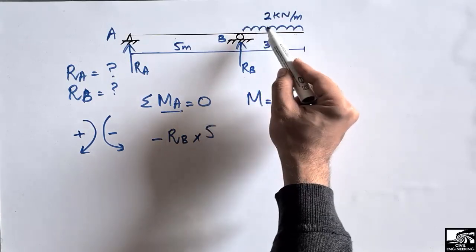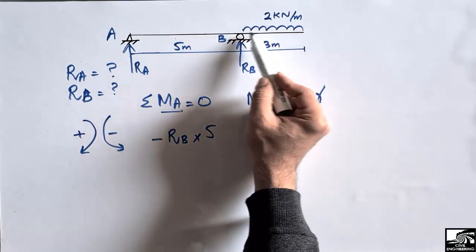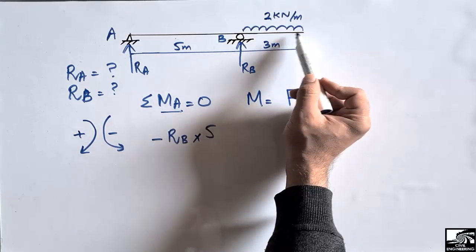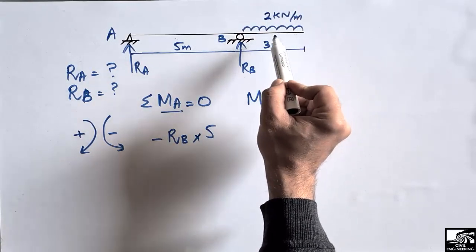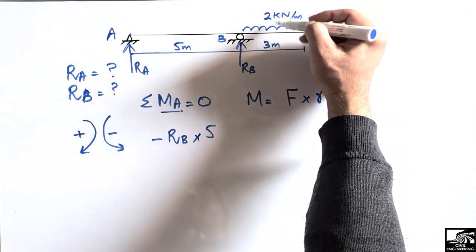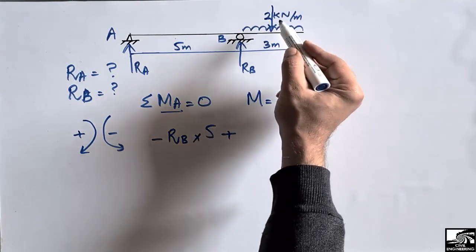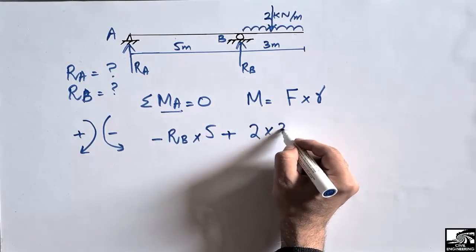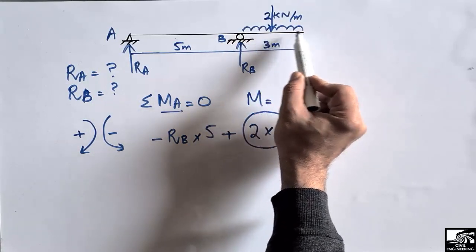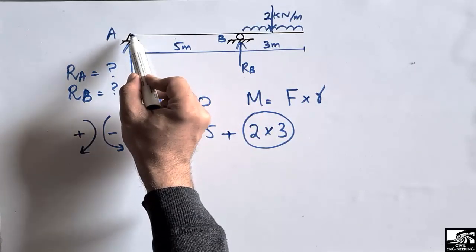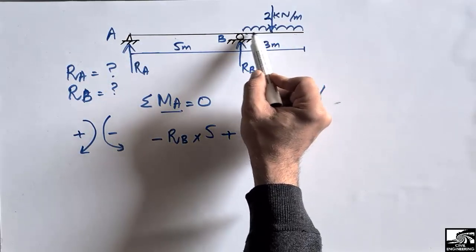This load acts downward, so it creates a moment in the positive clockwise direction. Since it is a uniformly distributed load, we first convert it into a concentrated load by multiplying 2 kN/m by 3 m. This concentrated load acts at the center of the distributed load length. The moment arm for this load is the distance from the midpoint of the UDL to point A, which is 5 plus 1.5 equals 6.5 meters.